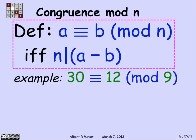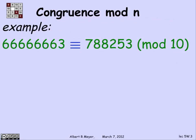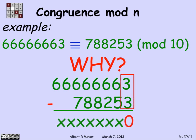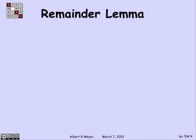Let's just practice. 30 is equivalent to 12 mod 9 because 30 minus 12 is 18, and 9 divides 18. An immediate application is that a large number with many 6's ending in a 3 is equivalent to 788,253 modulo 10. Why? Because when you subtract those two numbers, you get a number ending in 0, which means it's divisible by 10. It's very easy to tell when two numbers are congruent mod 10 because they just have the same lower digit.